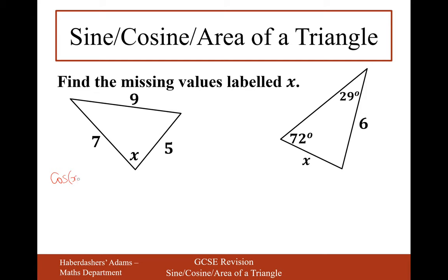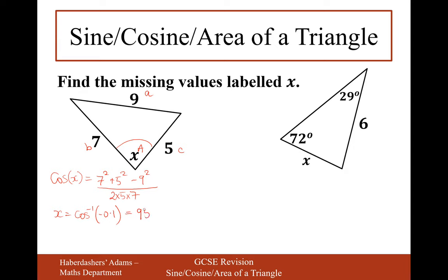cos X equals — I have to label the missing angle as A, so the opposite side is little a = 9. It doesn't matter which side is B or C. So it's going to be 7 squared plus 5 squared minus 9 squared over 2 times 5 times 7. Typing into the calculator gives minus 0.1. Then cos inverse of minus 0.1 gives 95.7 degrees. And yes, that makes sense according to the diagram.